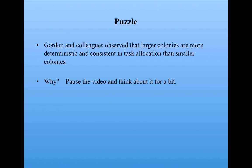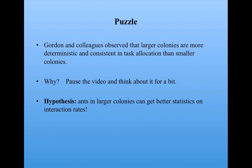Here's a little puzzle. Gordon and her colleagues observed that larger ant colonies are more deterministic and consistent in task allocation than smaller ant colonies. Why would a larger ant colony be better at optimally allocating tasks in a consistent and deterministic way than smaller colonies? The hypothesis is that ants in larger colonies basically get better statistics on interaction rates because they have more samples — each ant has, on average, more interactions with other ants, and so they get better statistics. So next time you see ants in your kitchen, bathroom, garden, or crawling on your leg, just remember that ants are very brilliant little statisticians.